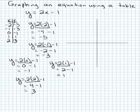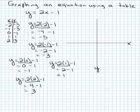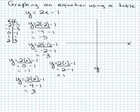Now I have my points and I'm going to graph them on the coordinate plane. This is my x-axis and this is my y-axis. Where they cross is (0, 0). To find negative 2, negative 5, I'll start at (0, 0), go to the left 2 spaces for negative 2, and down 5 spaces for negative 5, and make a dot.